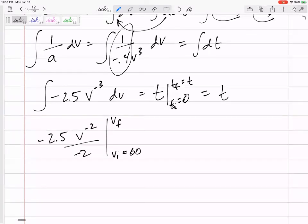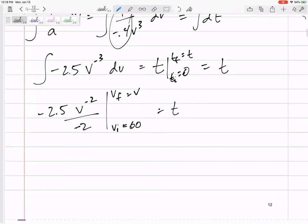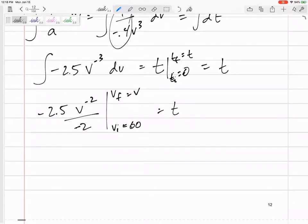These problems are why I make these definite integrals. This one did have an initial velocity of 60, and we're trying to find v. So this would be 1.25, so let me plug in v minus 1.25 times 60 to the negative 2 equals t.